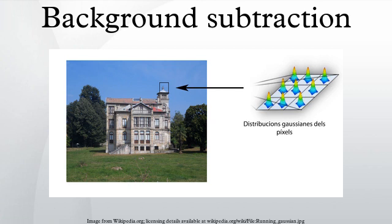The background is assumed to be the frame at time t. This difference image would only show some intensity for the pixel locations which have changed in the two frames. Though we have seemingly removed the background, this approach will only work for cases where all foreground pixels are moving and all background pixels are static. A threshold is put on this difference image to improve the subtraction, filtering pixel intensities on the basis of the threshold value. The accuracy of this approach is dependent on the speed of movement in the scene; faster movements may require higher thresholds.